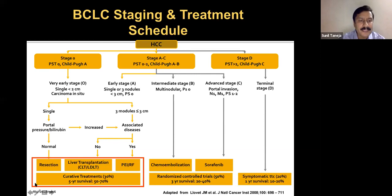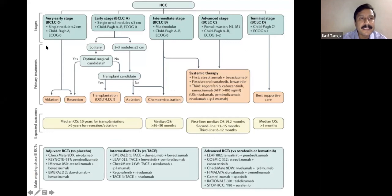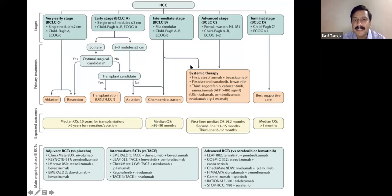A recent modification published in Nature defines very early, early, intermediate, advanced, and terminal stages. In the very early stage, ablation is now incorporated as the primary mode of treatment, as studies show ablation offers survival benefit similar to resection or transplant. In other stages, treatment modalities remain: ablation for small tumors, chemoembolization for intermediate stage. There has been a paradigm shift in management, and systemic therapy has also evolved with multiple agents being tried.